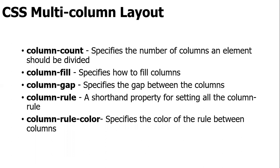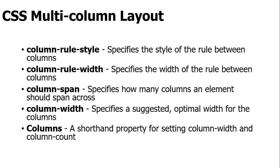For CSS multi-column layout, the key properties are: column-count (the number of columns), column-fill (how to fill columns), column-gap (gap between columns), column-rule (thickness of the rule between columns), column-rule-color (color of the rule), column-rule-style (style of the rule), column-rule-width (width of the rule), column-span (how many columns an element should span), column-width (suggested optimal width), and the shorthand 'columns' property for setting column-width and column-count together.